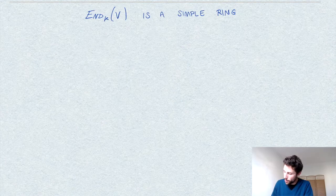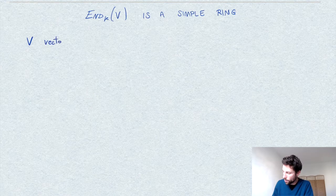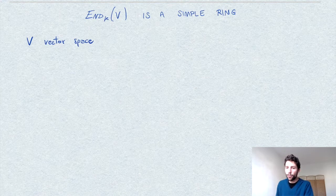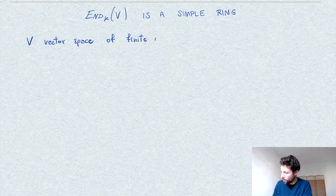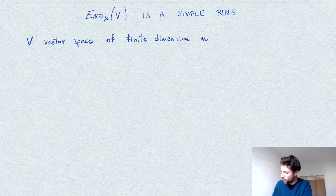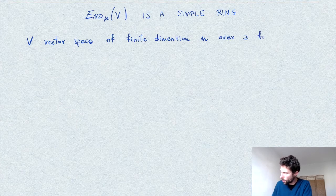I will denote by V a vector space of finite dimension, say N, over a field K.